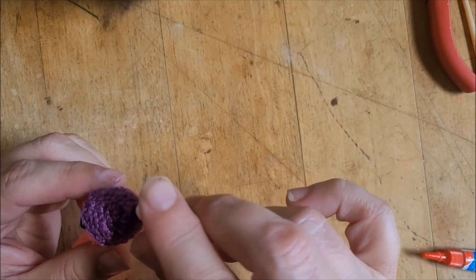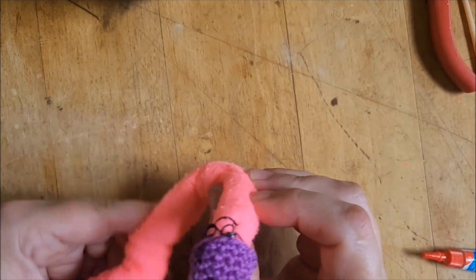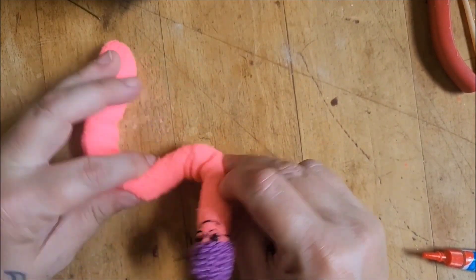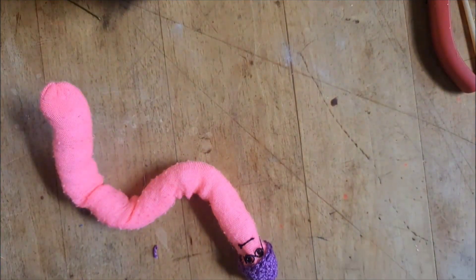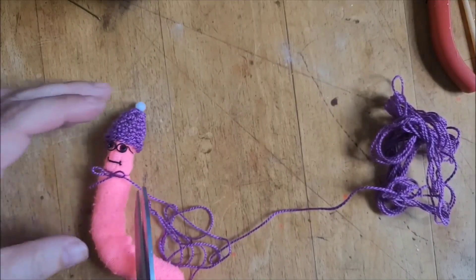I found the tiniest wee pom pom and added that as a bobble to his little hat. A snip of thread for a bow tie around his neck and your bookworm is complete.